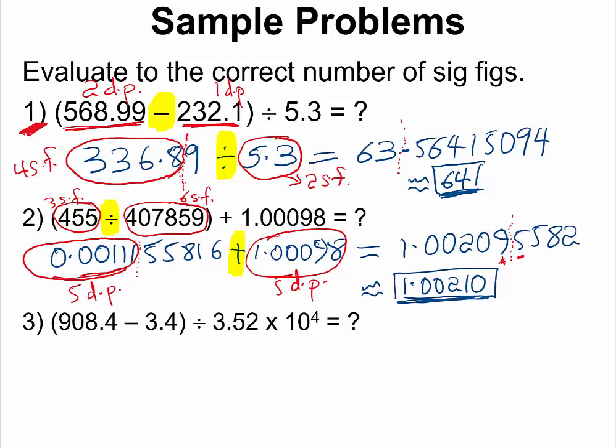Let us now take a look at the last question. Again we follow PEMDAS. If you subtract 3.4 from 9.002, you should get 5.602 from your calculator. However, you have to be very careful here. We just performed a subtraction operation, and for subtractions we are limited by decimal places. Both measurements here are one decimal place, which means this answer should also be one decimal place, and that is where the rounding line should be. If you do not include the trailing zero, your final answer will most likely come out wrong.